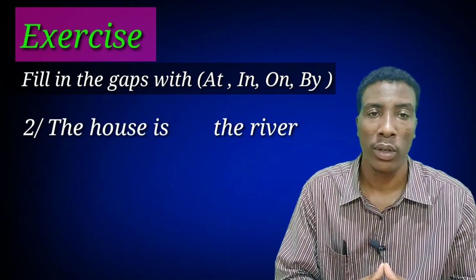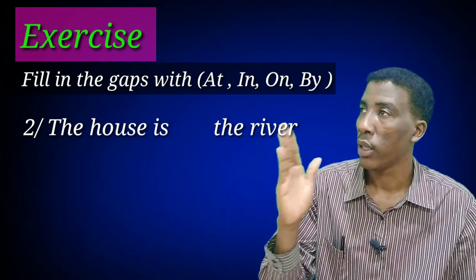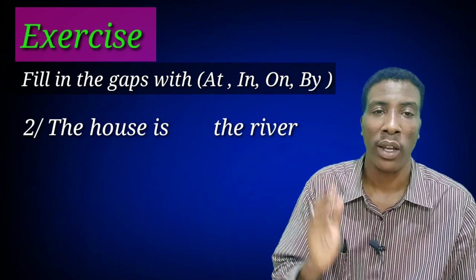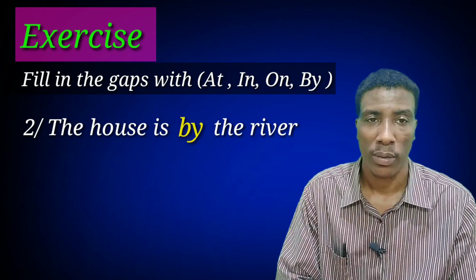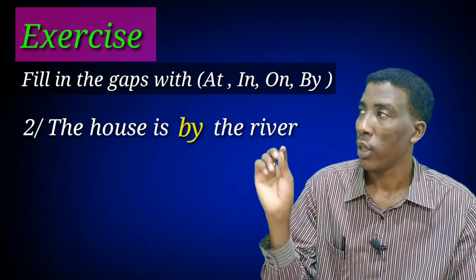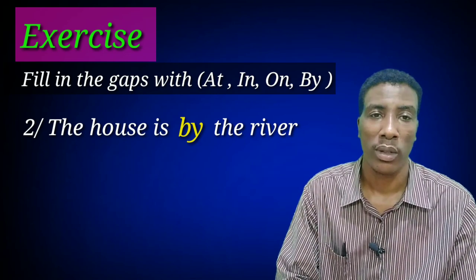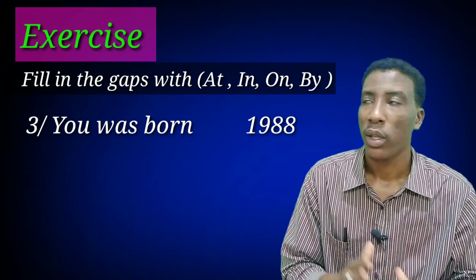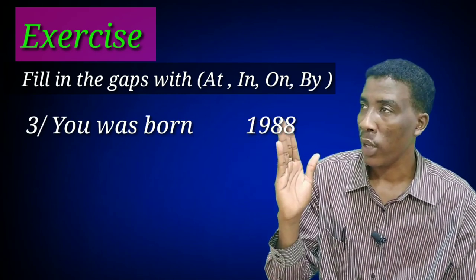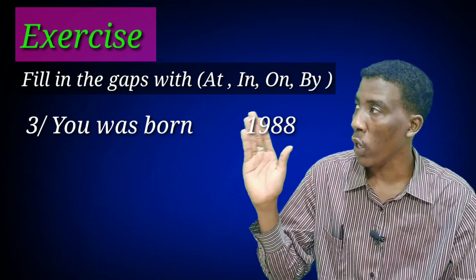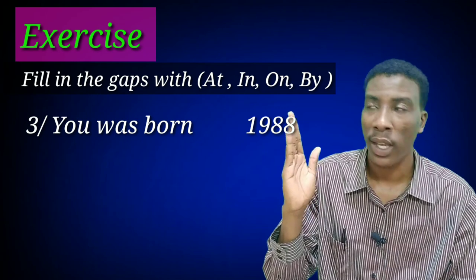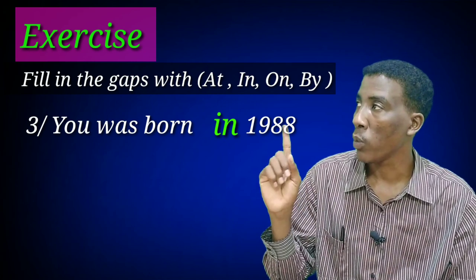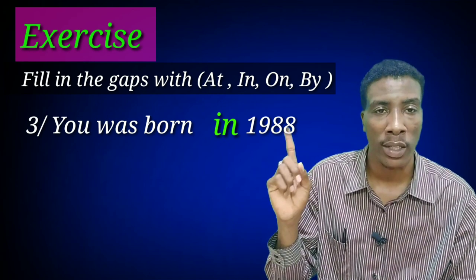Number two: 'The house is ___ the river.' The answer is 'by' — the house is by the river. Number three: 'You was born ___ 1988.' The correct answer is 'in' — you were born in 1988. We use 'in' because 1988 is a longer period.